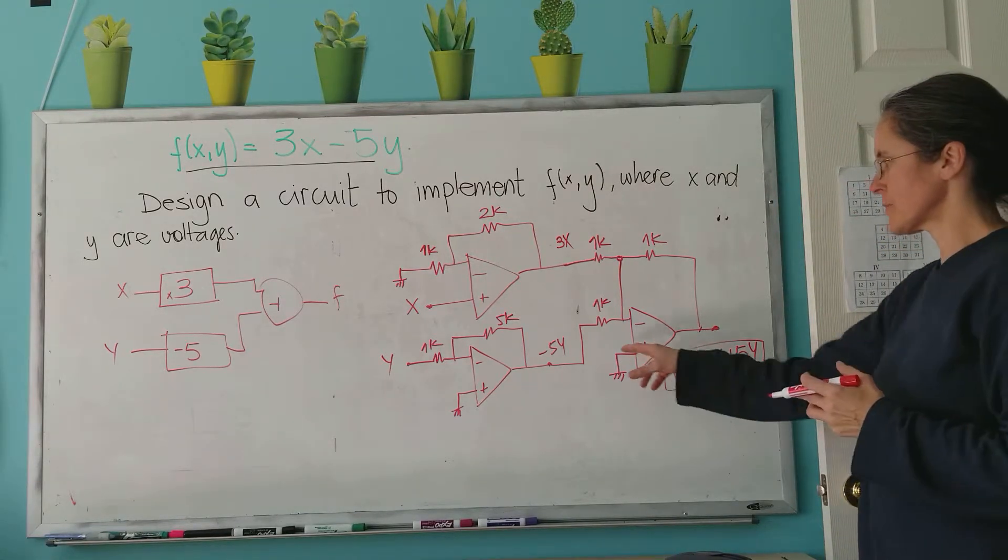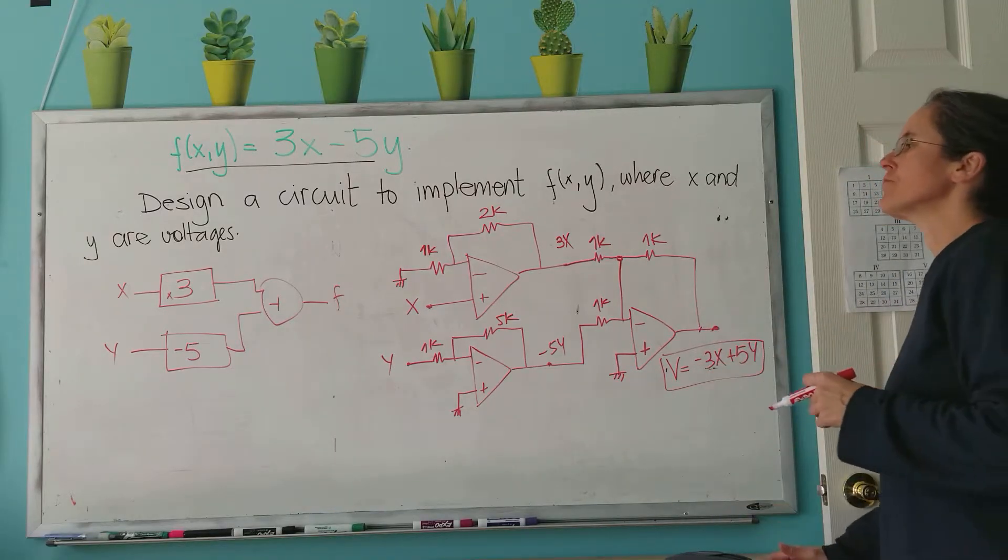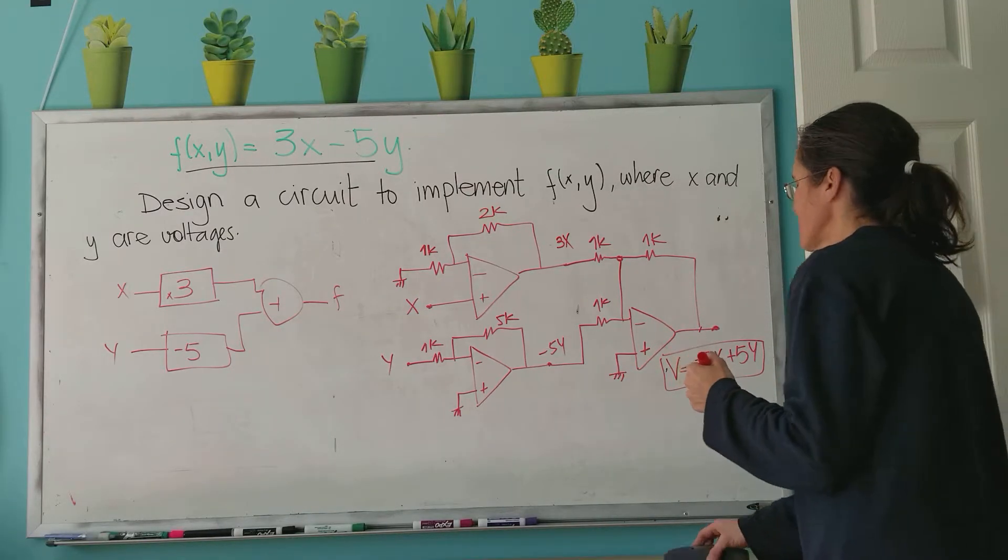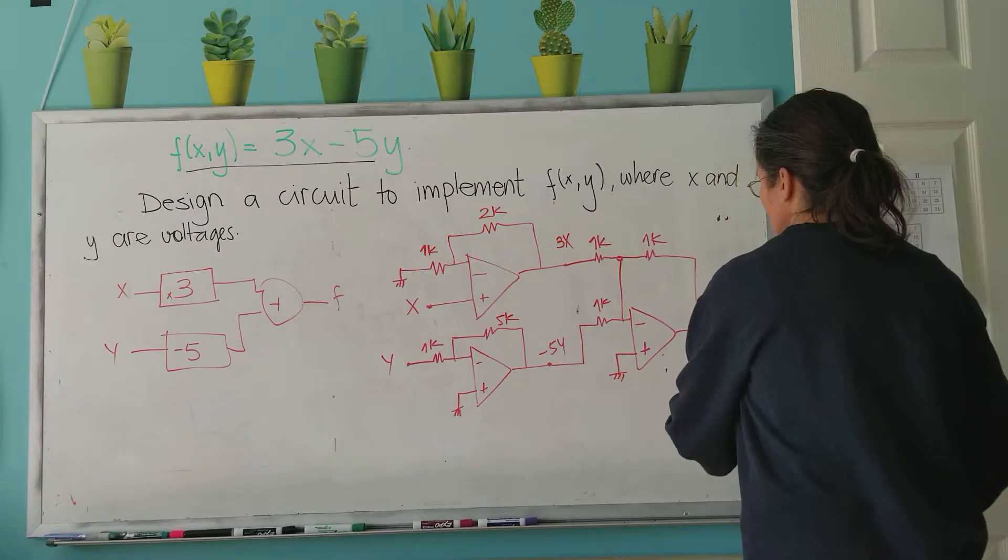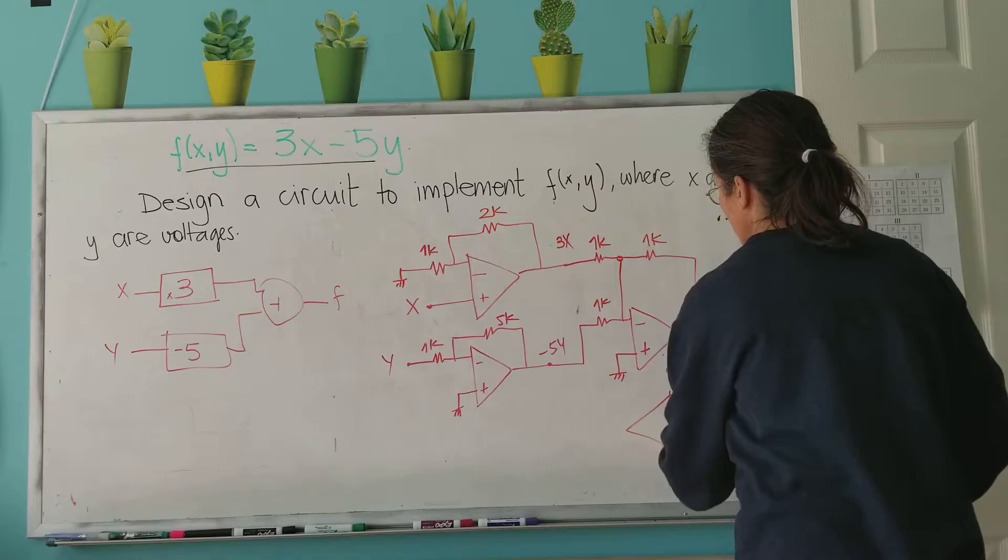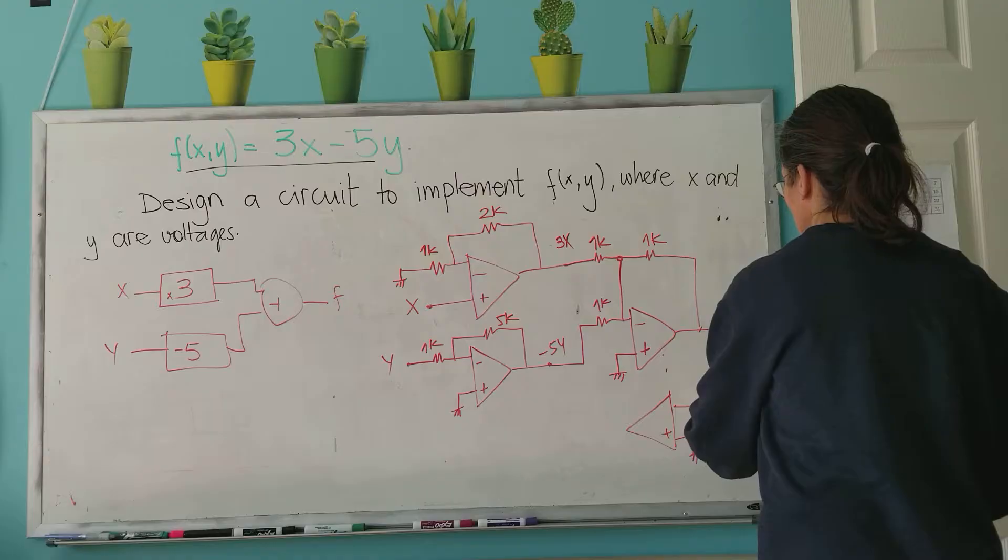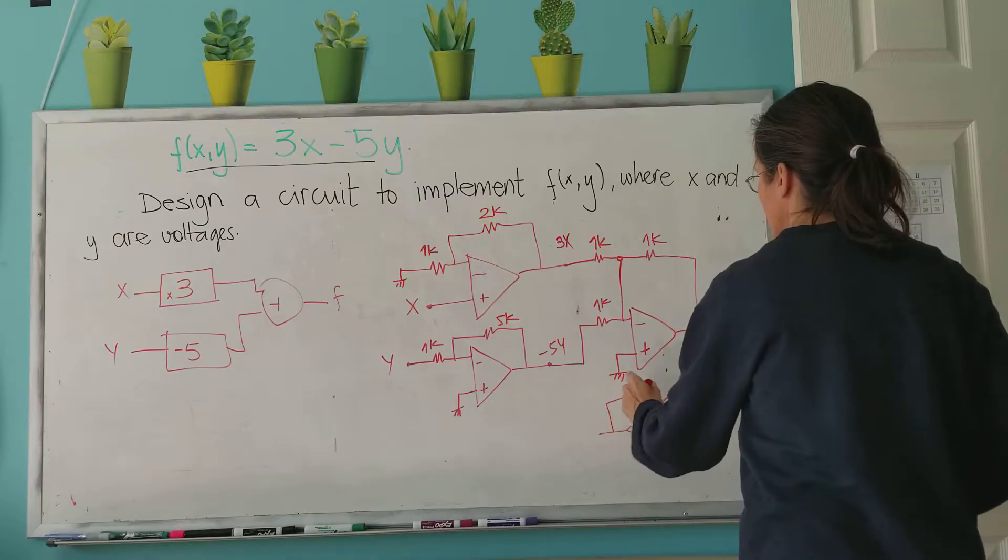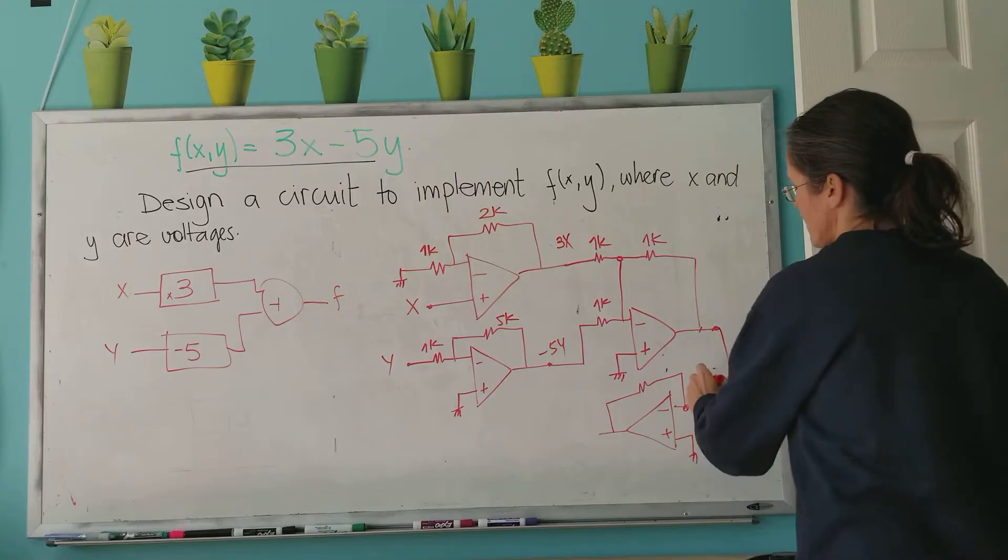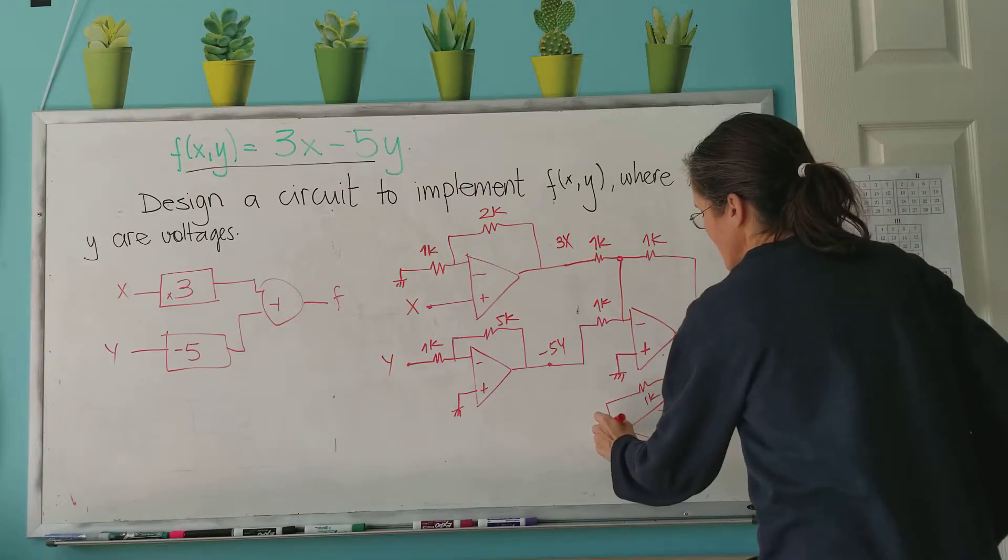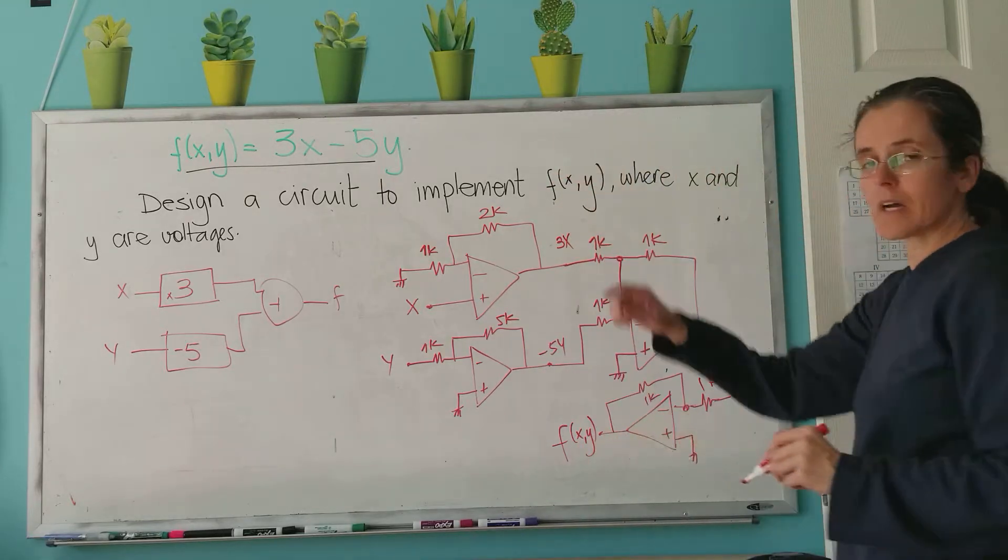If you have this situation on an exam, you can fix it two ways. One, adding another op-amp here and inverting that signal. You still need two resistors, unfortunately, but you would get away with that. So this inverts. If this is 1k and 1k, here I have f(x,y) to be exactly what I asked.